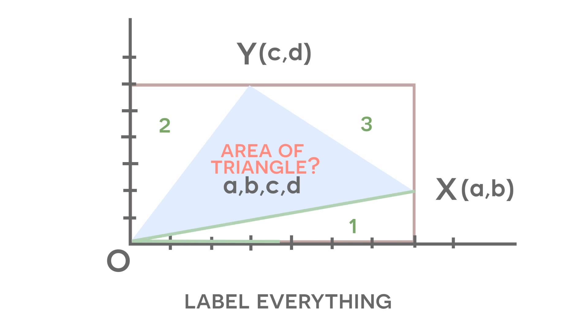And let's start by looking at triangle number 1. Well, using the coordinates A,B, we know that the base of this triangle is going to have a distance of A, and we know the height of this triangle is going to have a distance of B.